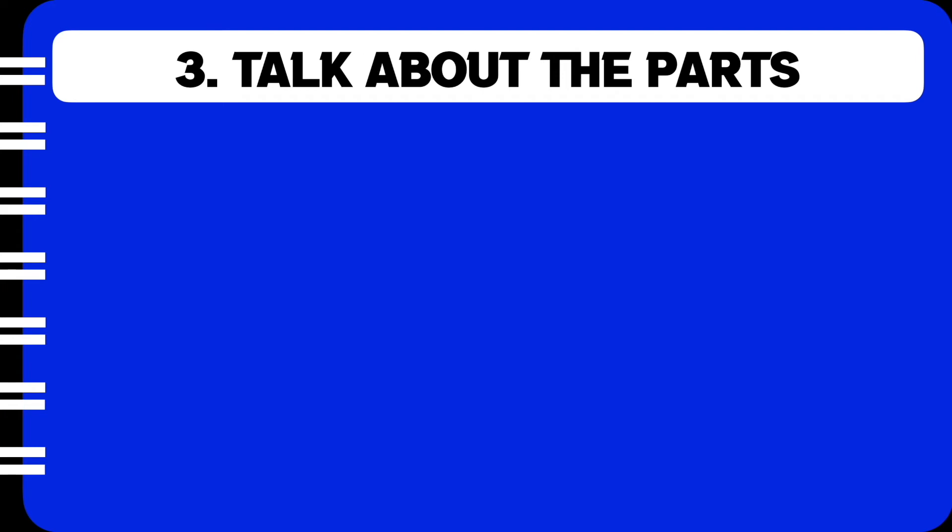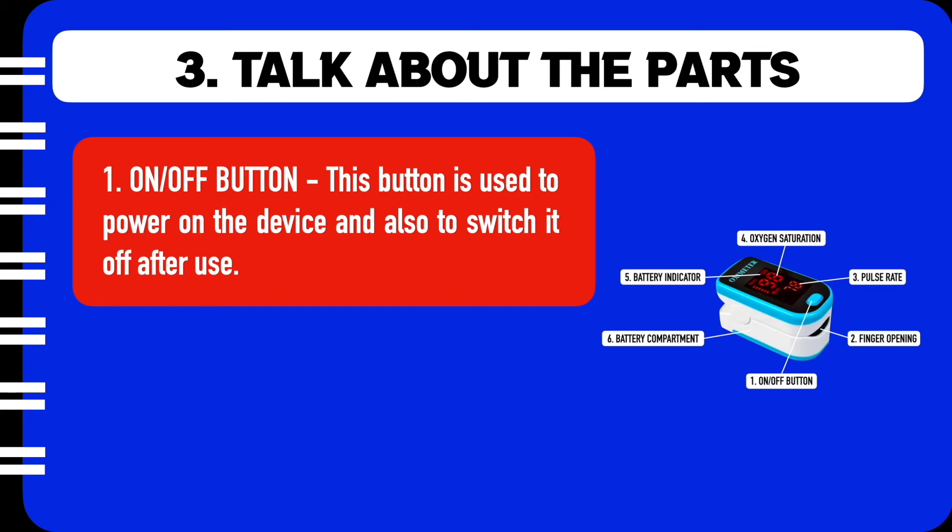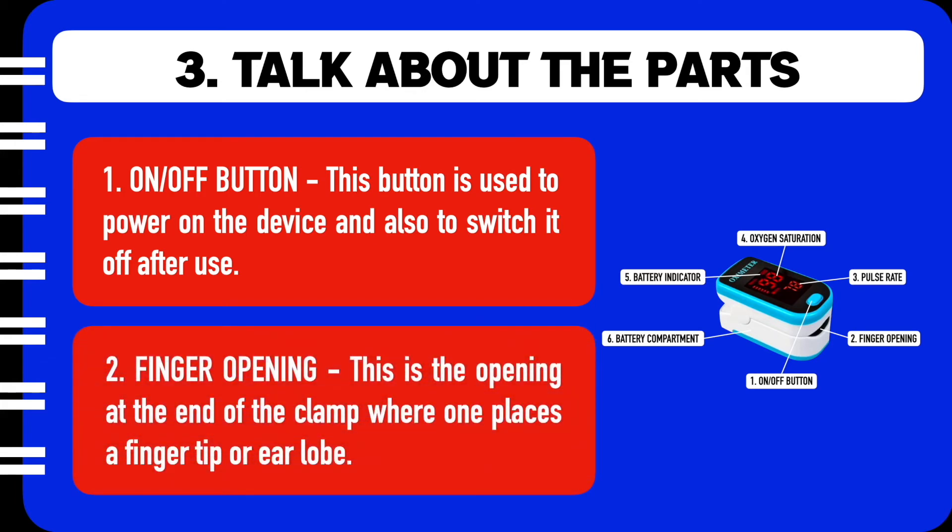The third part of a description is to talk about the different parts or components. So let me start with the on-off button. This button is used to power the device and also switch it off after use. Then moving on to the second component which is the finger opening. This is the opening at the end of the clamp where one places a fingertip or an earlobe.